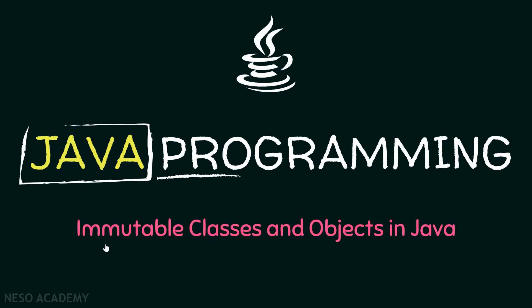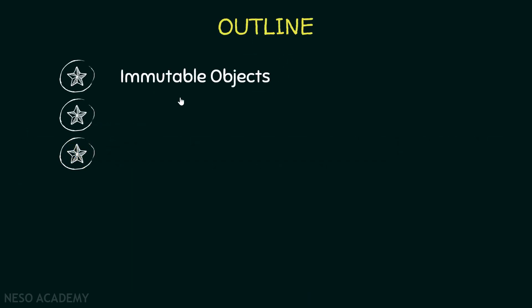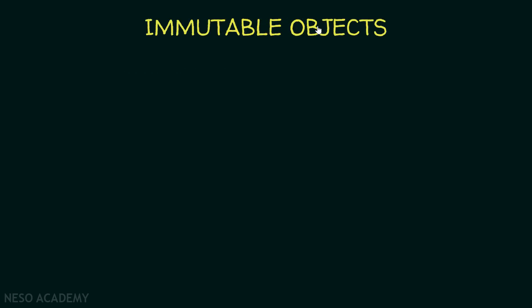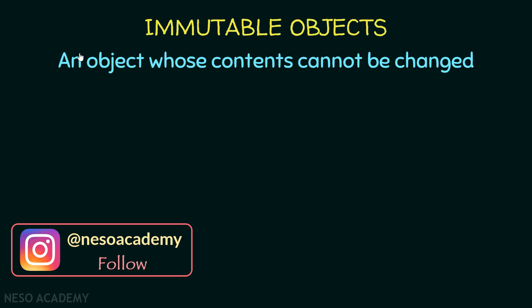Hello friends and welcome back. In this lecture we will talk about immutable classes and objects. Here is our outline: we will see what is an immutable object and what is an immutable class, and we will see some examples. Let's get started. An immutable object is an object whose contents cannot be changed.